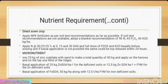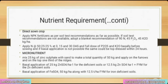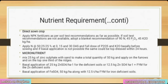If soil test recommendations are not available, adopt a blanket recommendation of 90 kg nitrogen, 45 kg P₂O₅ and 45 kg K₂O per hectare. Apply nitrogen at the rate 50-25-25% at 0, 15 and 30 days after sowing, and full dose of P₂O₅ and K₂O as basal before sowing. If basal application is not possible, the same could be top-dressed within 24 hours.